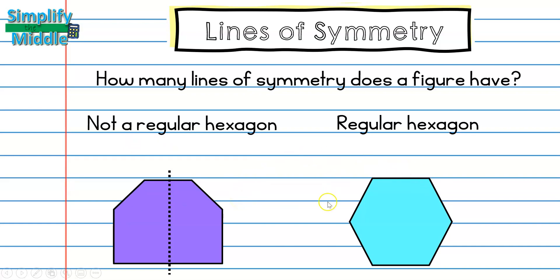On the regular hexagon, I noticed that I could make a fold going from top to bottom — the vertical line of symmetry. That fold creates two shapes with five sides each: one, two, three, four, five — making two pentagons that are the exact same size and shape.